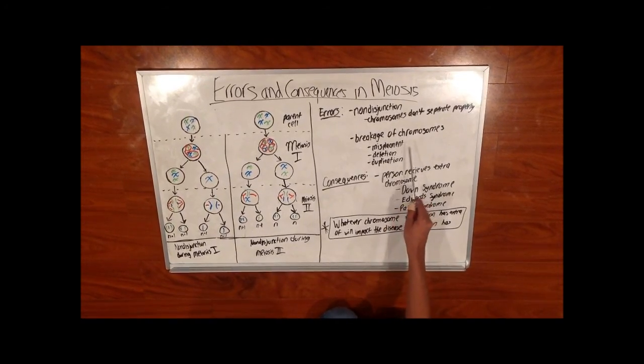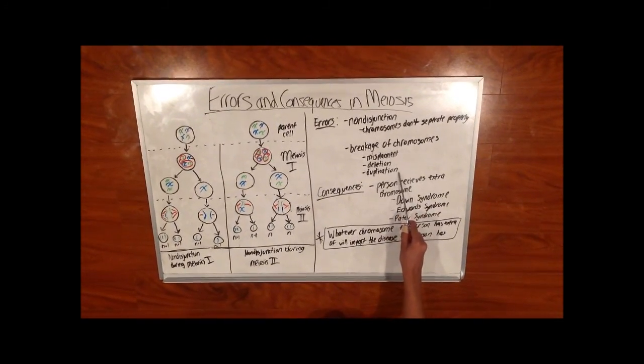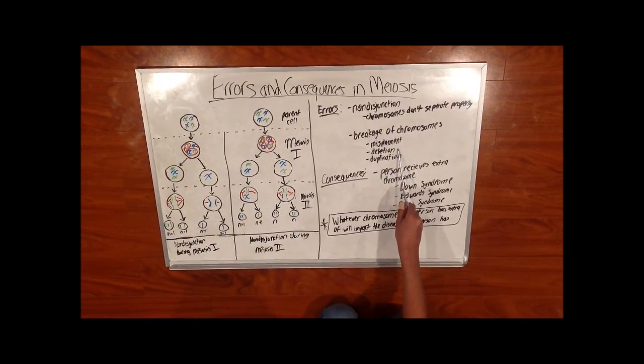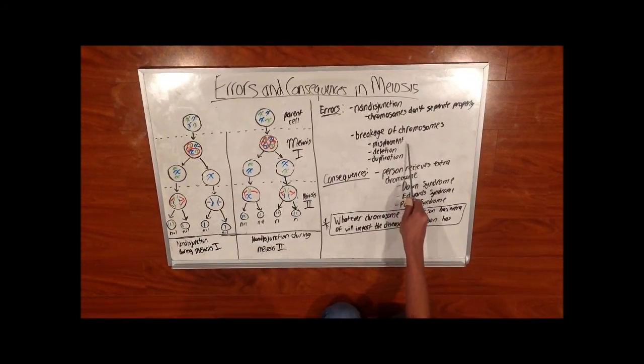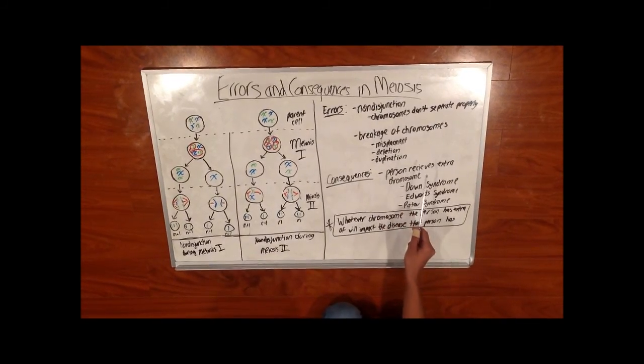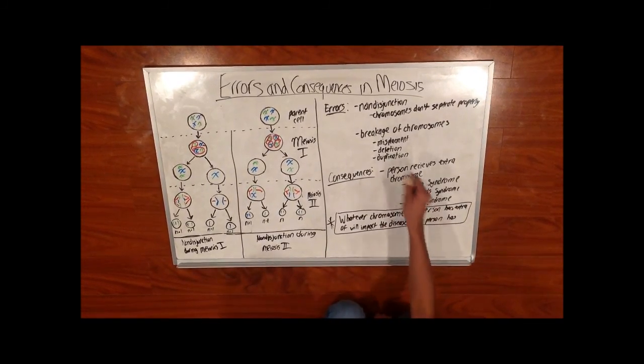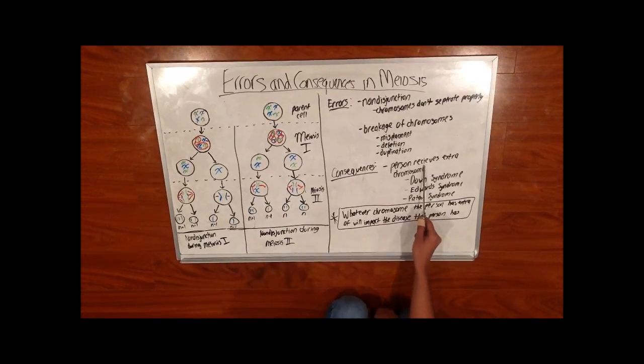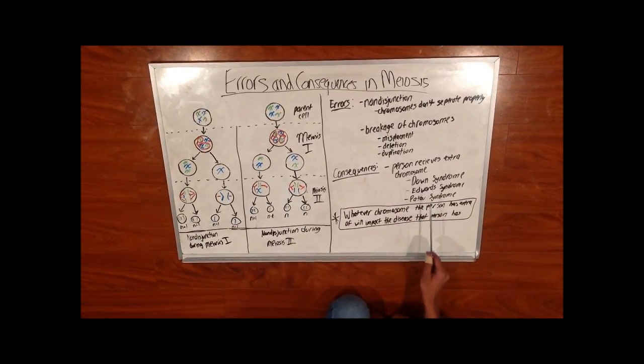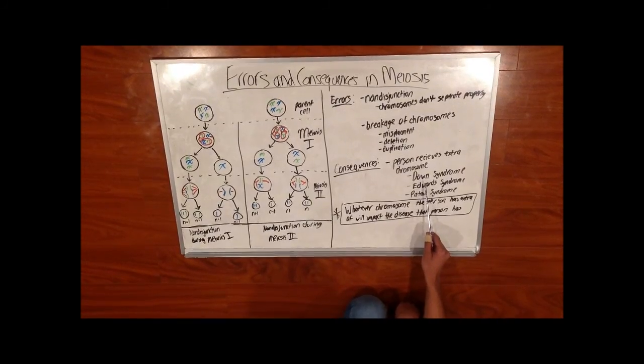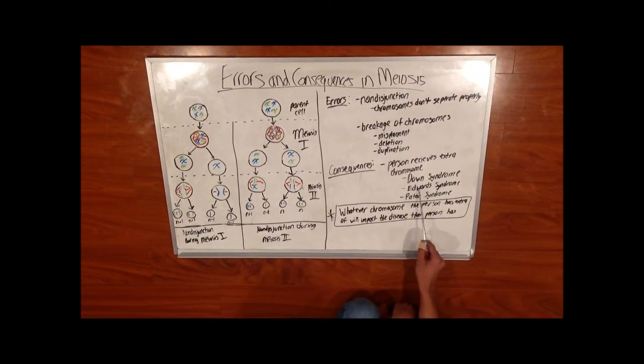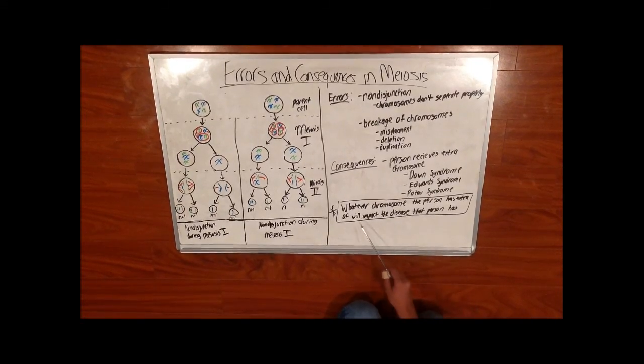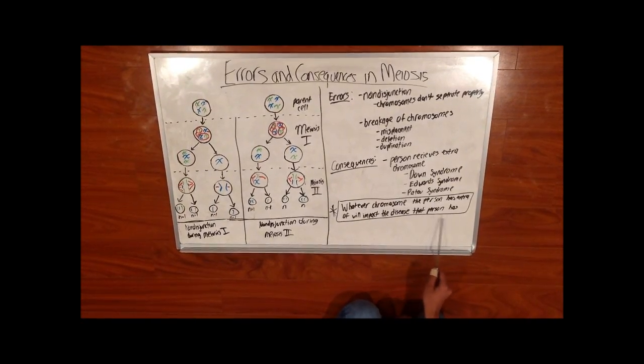The breakage of chromosomes includes misplacement, deletion, and duplication. The chromosome is duplicated, deleted, removed by accident, or misplaced, and that can lead to the breakage of chromosomes. These two things can lead to some consequences. A person can receive an extra chromosome, leading to some diseases including Down syndrome, Edward syndrome, and Patau syndrome. Whatever chromosome the person has extra of will impact the disease that person has.